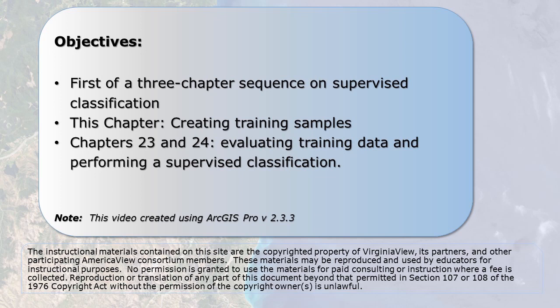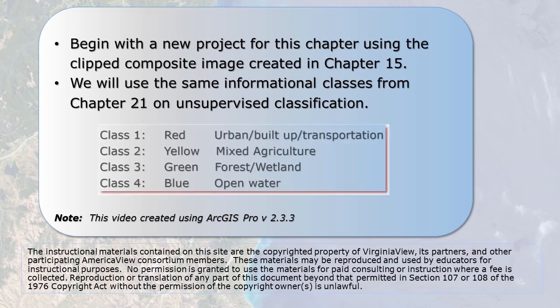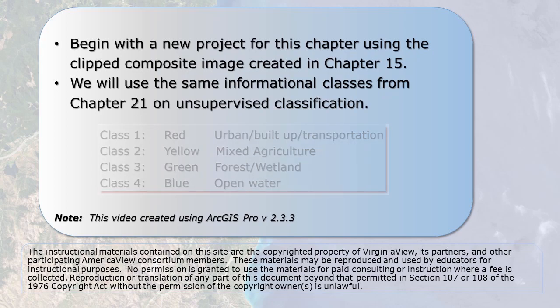In chapters 23 and 24, we cover evaluating training data, generating supervised signatures using training samples, and finally performing a supervised classification on a Landsat 8 image. This chapter uses the 11-band composite Landsat 8 image, subset to the extent of the map viewer created in chapter 15. We'll be using the same informational classes used in the chapter on unsupervised classification, chapter 21.